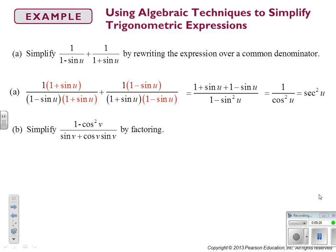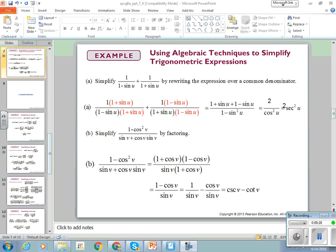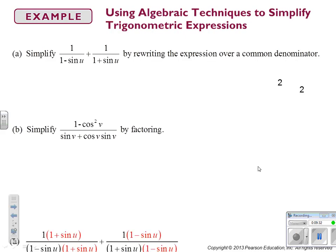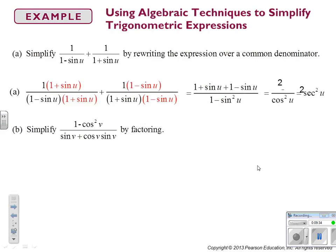So this gives us 2 over cos²u, which is equal to 2 sec²u. Factoring is another technique to look for when simplifying — once you factor out a common term, you might find an identity living inside.